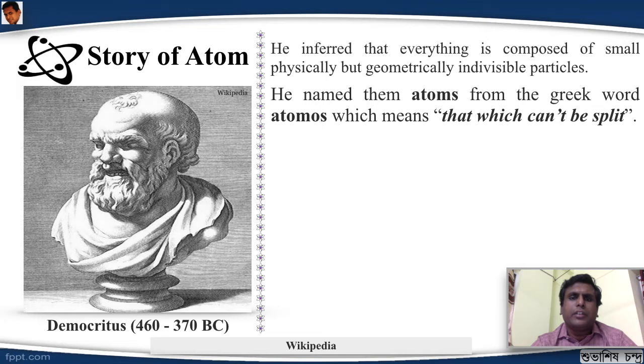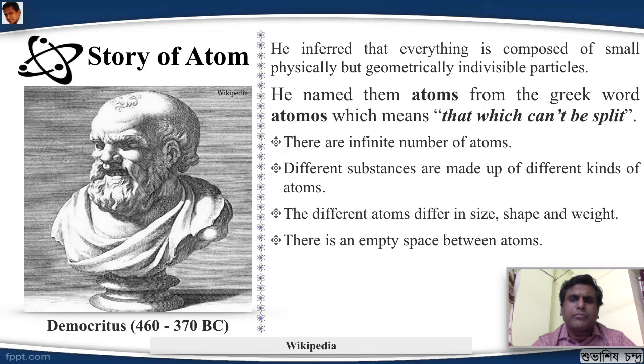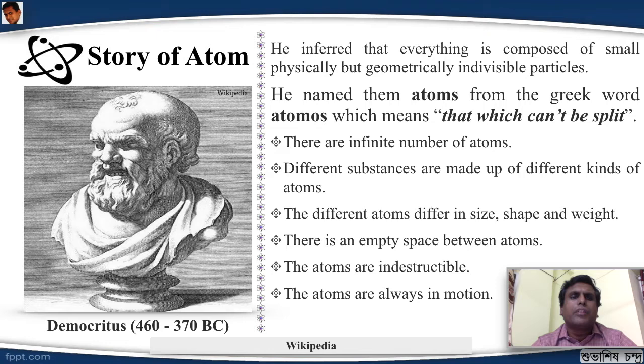He said there are infinite number of atoms. Different substances are made up of different kind of atoms - glass is made of glass atoms, paper is made of paper atoms, wood is made of wood atoms, and these atoms differ in size, shape, and weight. There is empty space between the atoms, the atoms are indestructible and they are always in motion. Now many of them might not hold true right now, some of them do. This was the first time when atoms were thought of.